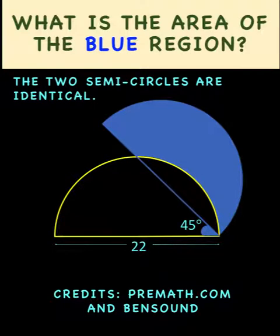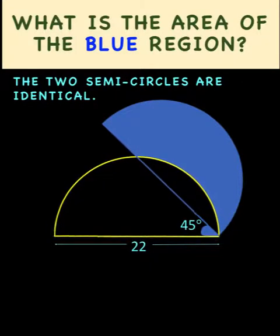Hi everyone, here is our math problem for today. We are given here two identical semicircles. We have this yellow semicircle and this blue semicircle.